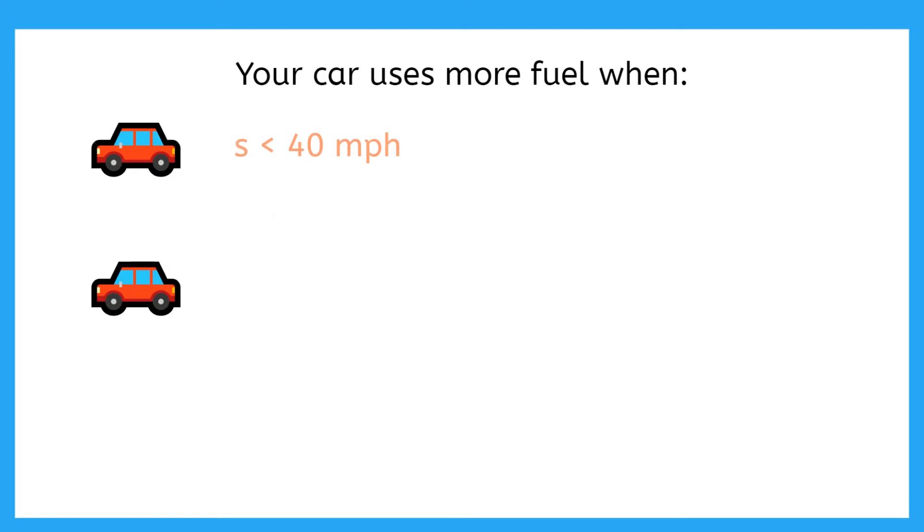Did you know that you can drive at certain speeds and save gas money? That's right! When you drive really fast or really slow, your car uses more fuel. We can mathematically write this as, your car uses more fuel when s, the speed, is less than 40 miles per hour or is greater than 70 miles per hour. This is an example of an OR compound inequality.